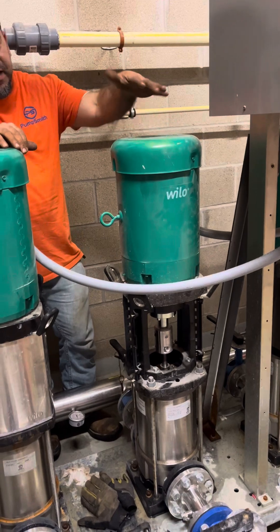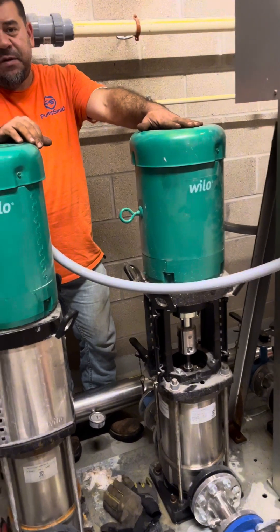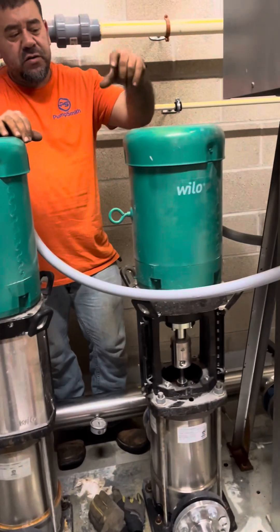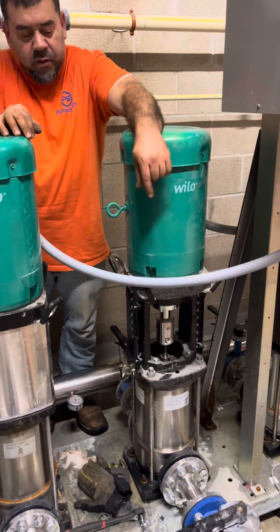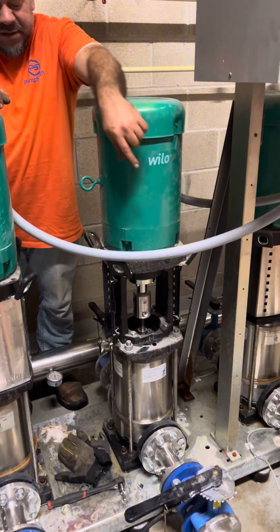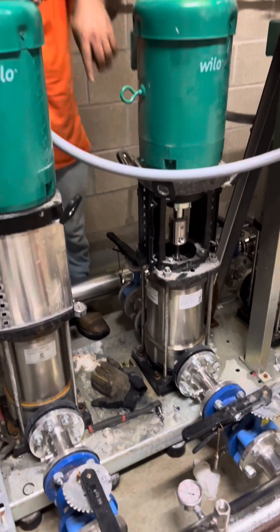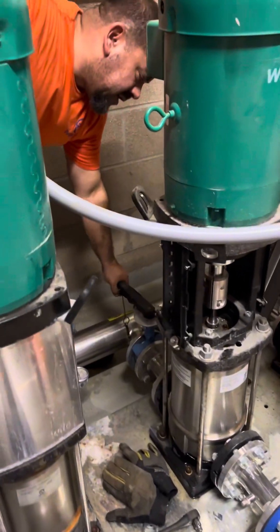We're going to show how to do a mechanical seal replacement using the mechanical seal cartridge on this Willow T-Lex G pump. What we're going to do is isolate it, so we're going to close the discharge valve and close the inlet valve.